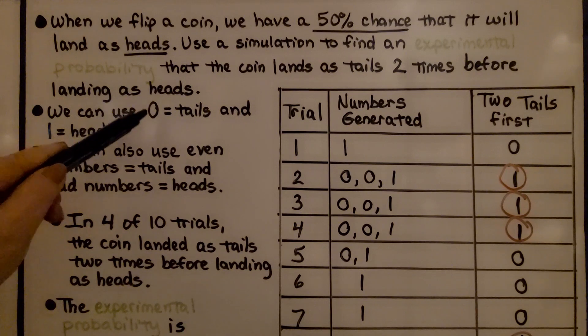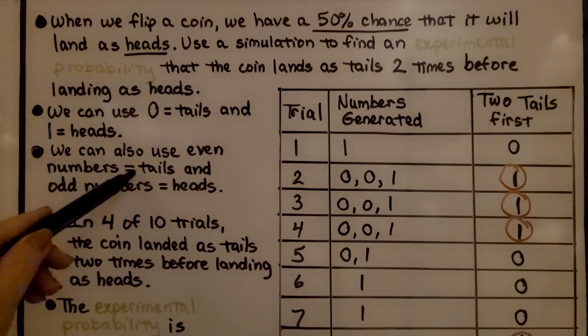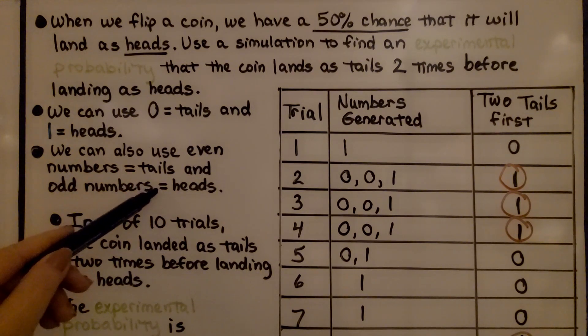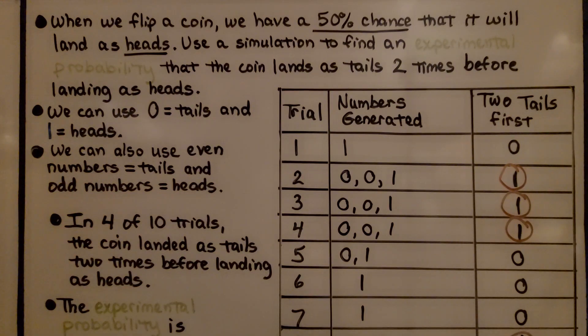And we can use 0 for tails and 1 for heads. We can also use even numbers to equal tails and odd numbers to equal heads. Then we can use greater numbers than 0 and 1. But I'm going to use 0 and 1.